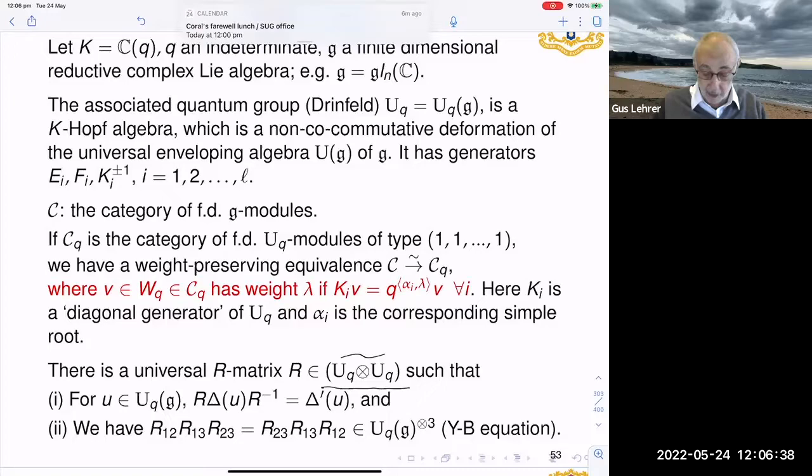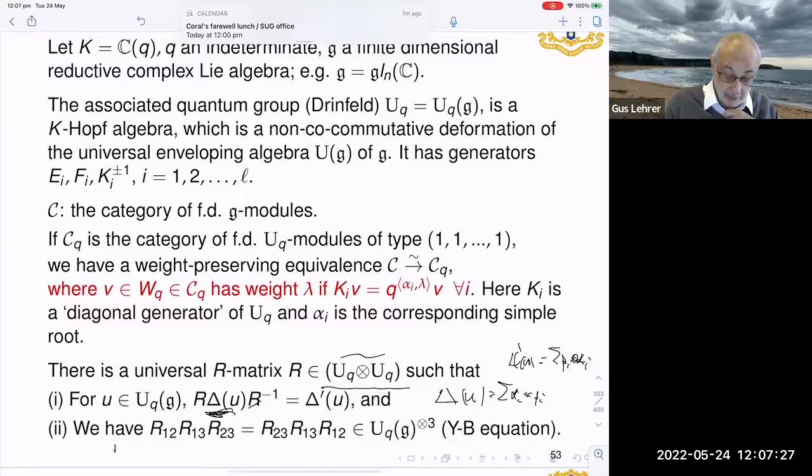And it has the following properties. So it conjugates the co-product into the opposite co-product, where if delta(u) is sum alpha_i tensor beta_i, delta prime(u) is equal to sum beta_i tensor alpha_i. Most importantly, the R matrices give us a solution to the Yang-Baxter equation where these subscripts mean for example R_12 is R tensor the identity, and R_13 is alpha_i tensor 1 tensor beta_i, and R_23 is identity tensor R. So you have this equation, so the two outside components are swapped.